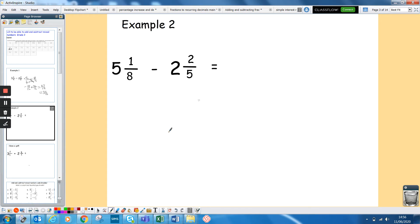Next one. Again, top-heavy fraction first, so five times eight is 40 plus your one is 41 over eight. Two times five is 10 plus your two, 12 over five.